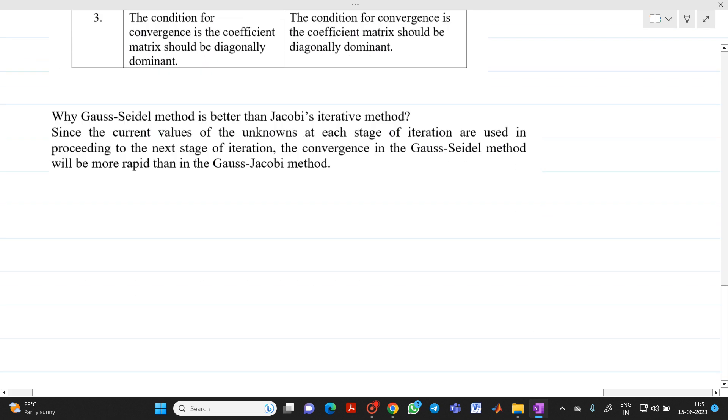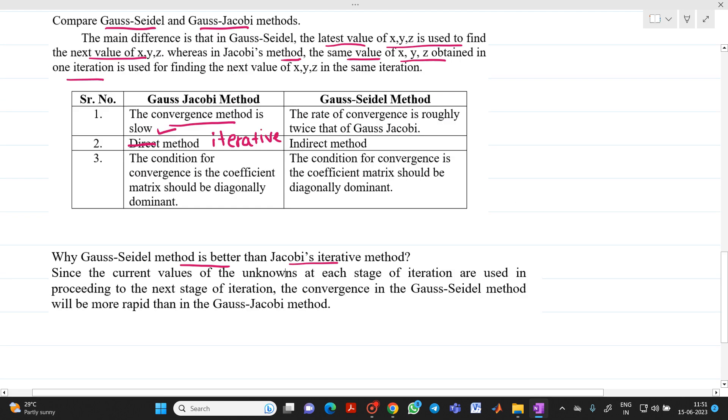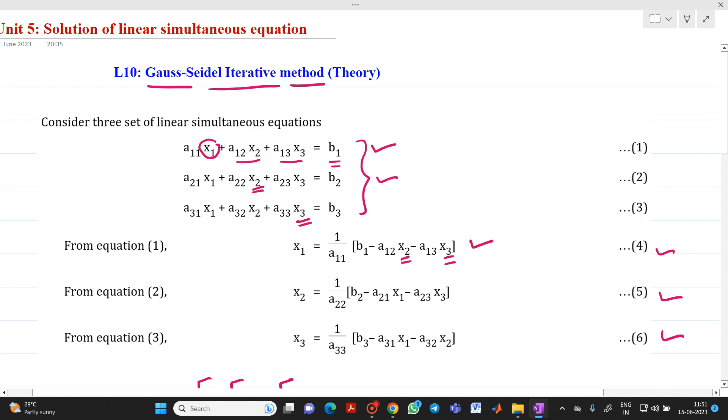Now, the next question is, why Gauss-Seidel method is better as compared to that of Jacobi method? Because, since the current values of unknown at each stage of iteration are used in the proceeding to the next stage of iteration, the convergence, that is nothing but the rate with which we will get the correct answer, the convergence of Gauss-Seidel method will be more or you can say it is rapid as compared to that of Gauss-Jacobi method. So, this is what is the derivation that we have seen for Gauss-Seidel method.